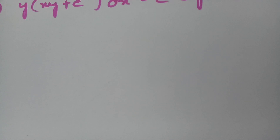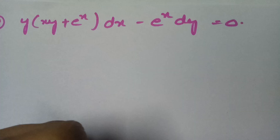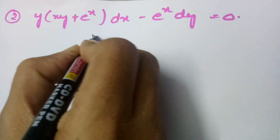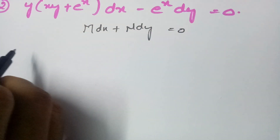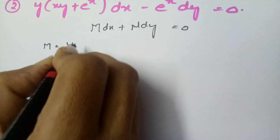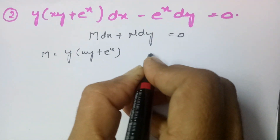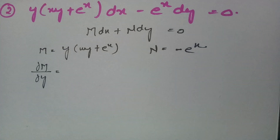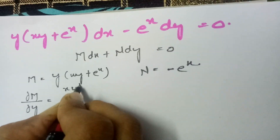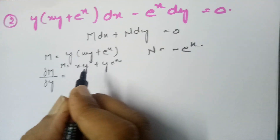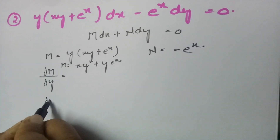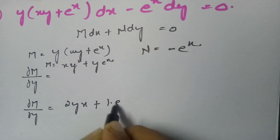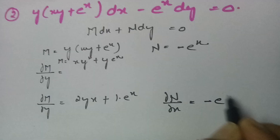For the second problem, the equation is of the form M dx + N dy = 0 where M = xy² + y·eˣ and N = −eˣ. We compute dM/dy = 2xy + eˣ and dN/dx = −eˣ.